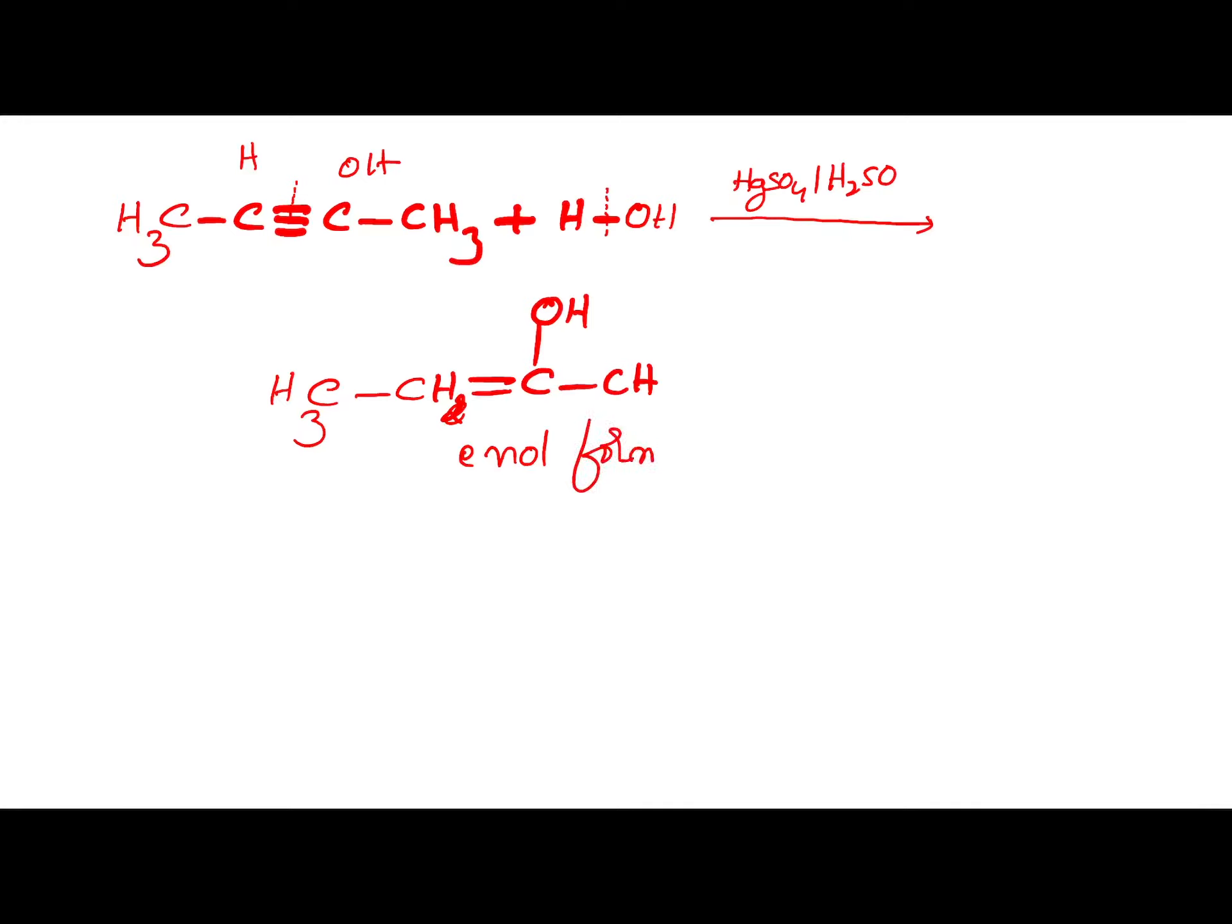So after the formation of enol form, what happens? Tautomerization takes place. Since enol form is unstable, it undergoes tautomerization and will be converted into a relatively stable form, that is keto form.